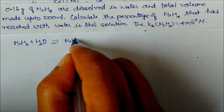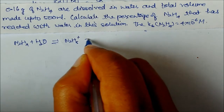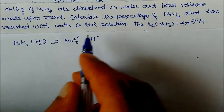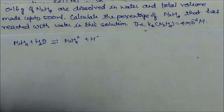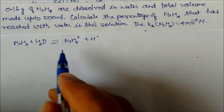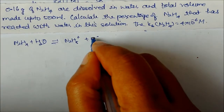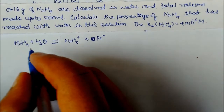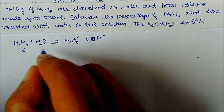N₂H₄ is dissolved in water and will dissociate to form N₂H₅⁺ and OH⁻. Water provides the H⁺, and OH⁻ comes out from the water. The initial concentration is C and zero for the ions.